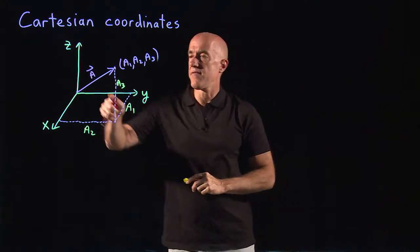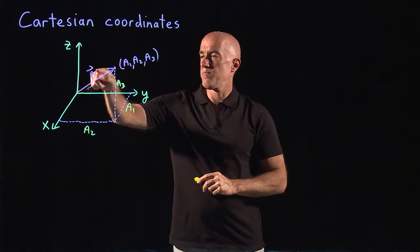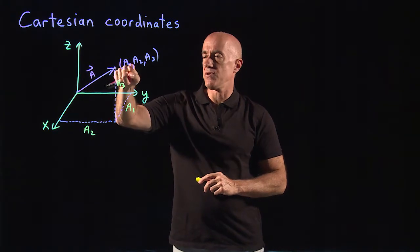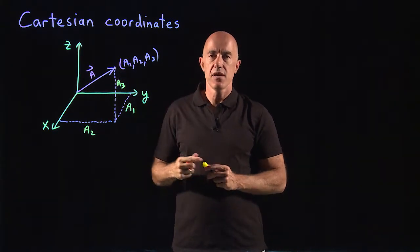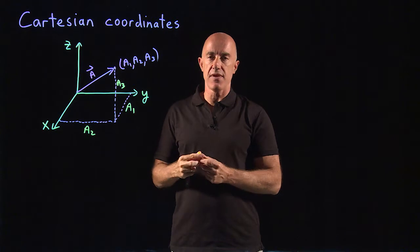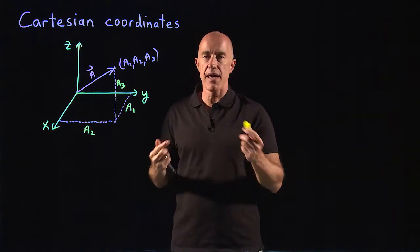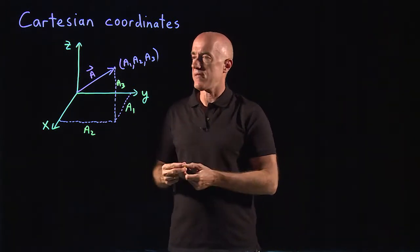So now we have a vector a. When you put the base at the origin, it points to a1, a2, a3. Remember, a vector doesn't have any particular location in space, so how do we write this vector a?